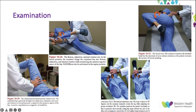Key things to look for on examination include a Trendelenburg gait suggestive of abductor fatigue, ligamentous laxity assessed with the Beighton score, increased internal rotation at the hip with flexion, a positive anterior apprehension sign, and increased femoral anteversion on prone external rotation.